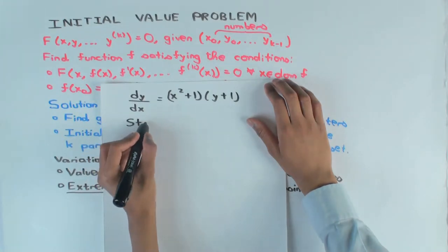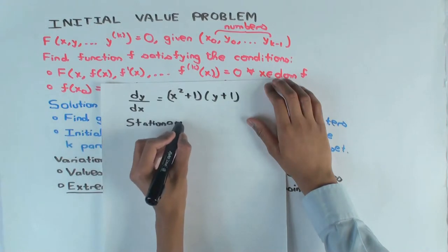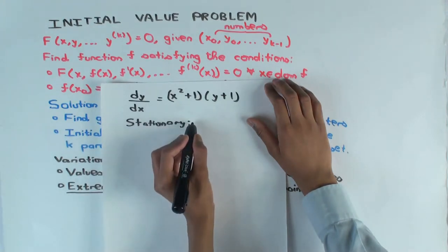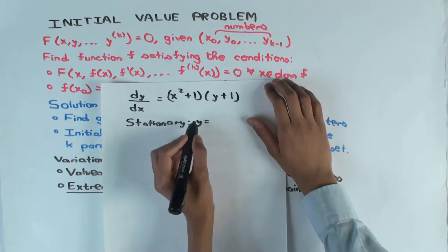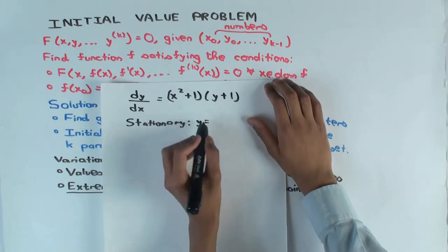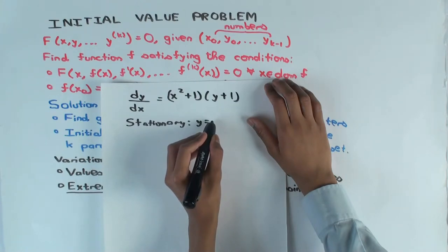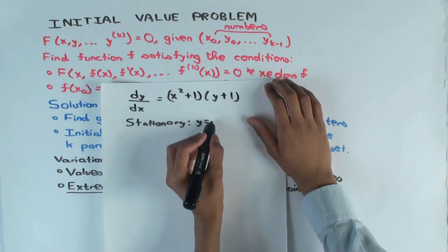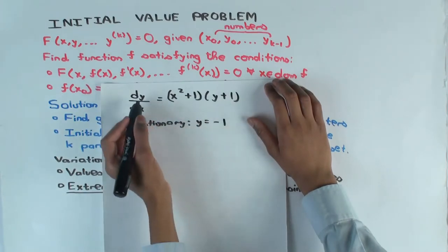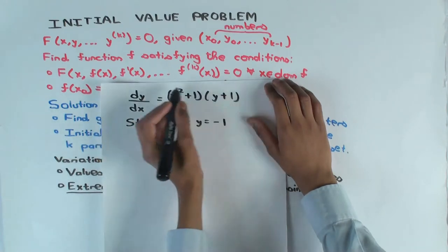For the stationary solutions — the constant function solutions — those are the roots of the right-hand side. So if y is the constant function negative one, then this equation is satisfied. Do you remember the constant stationary solutions?